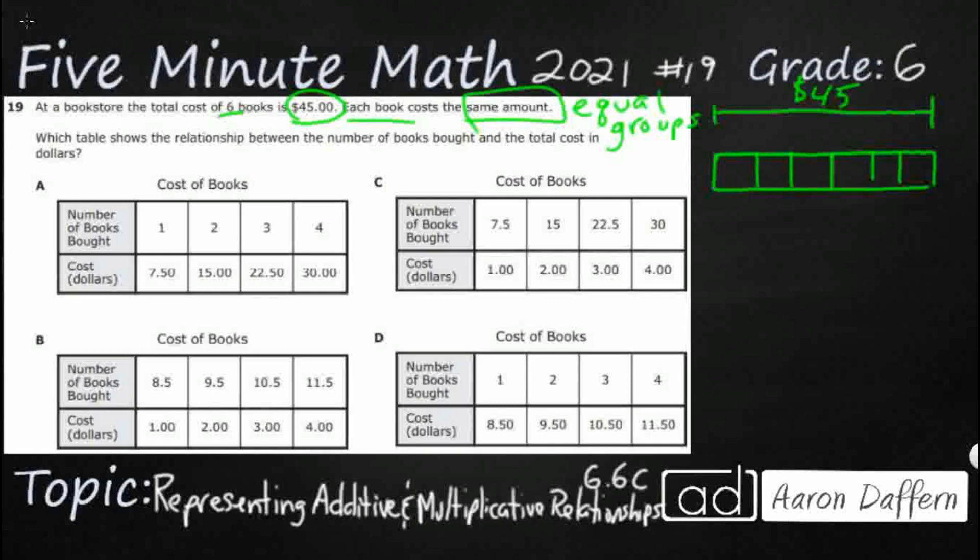So each book costs the same amount. Another way to think of it would be a proportion. So let's say six books costs $45. So one book, that's really what we're looking for. What's the base price or the unit price equals our unknown number.